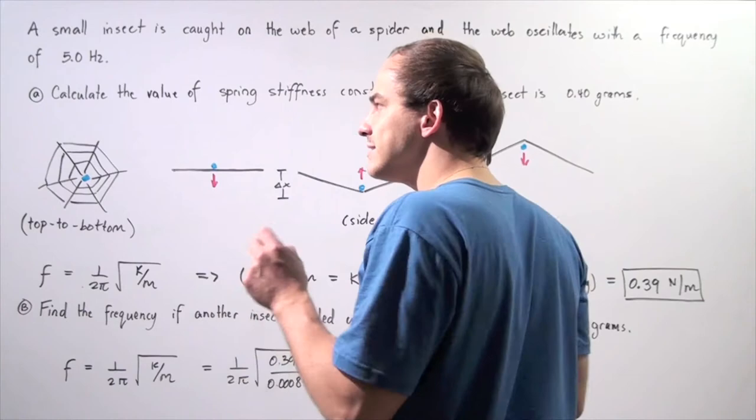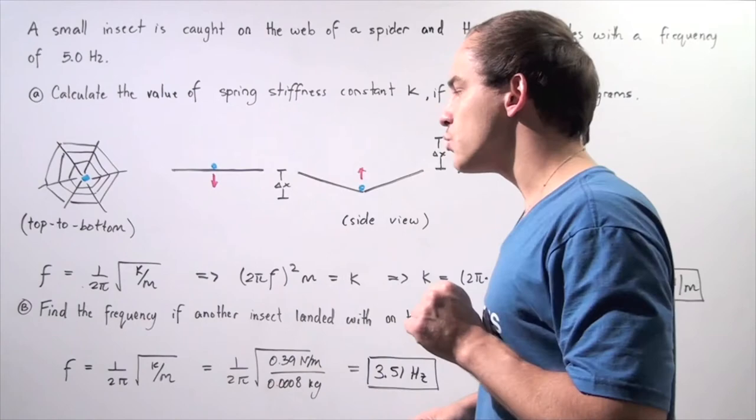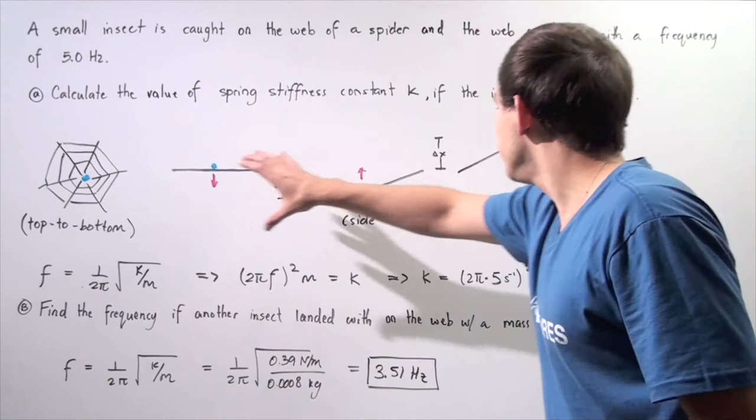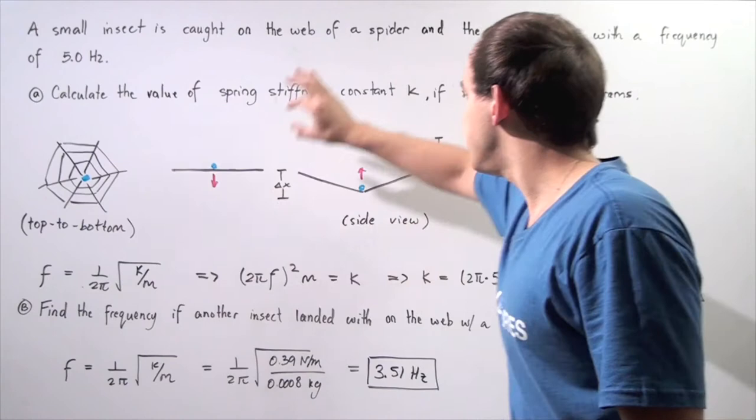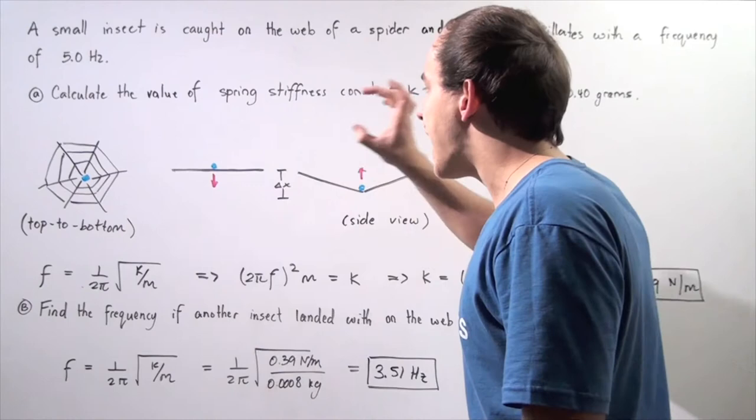So the moment our insect lands onto our web, if we examine the side view of our web, we're going to see the following oscillation. So our spider web will oscillate back and forth in the following manner, where our change in x will be the amplitude of our oscillation.